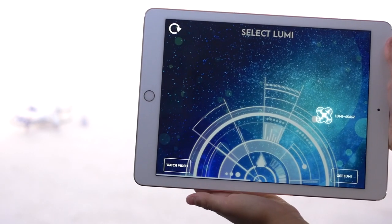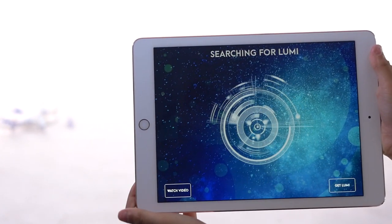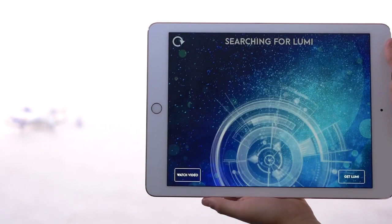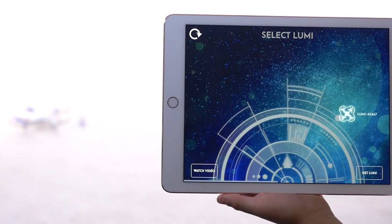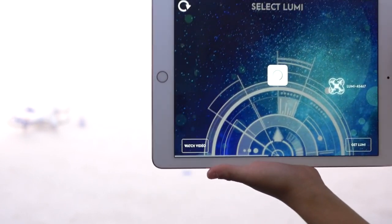Grab your favorite iOS or Android smart device and download the Lumi app. Once downloaded, start up the app and press the search button in the top left corner to locate your Lumi. Once you see it appear on the screen, simply tap the Lumi icon to connect.